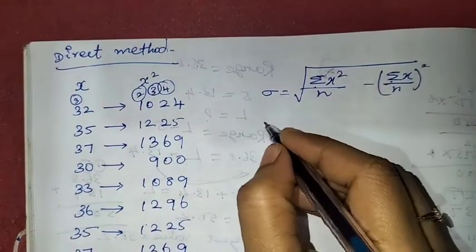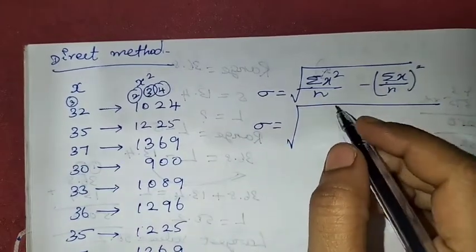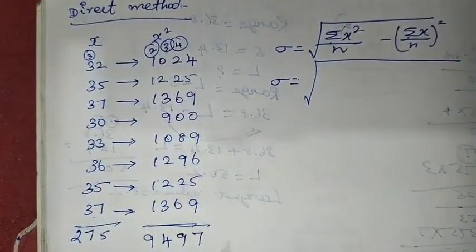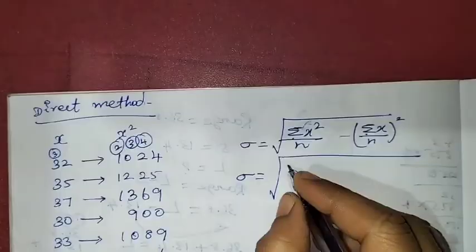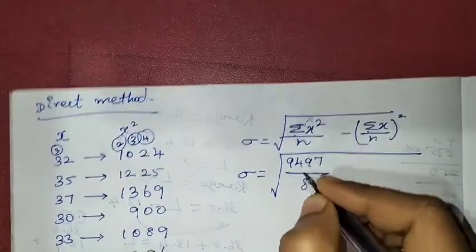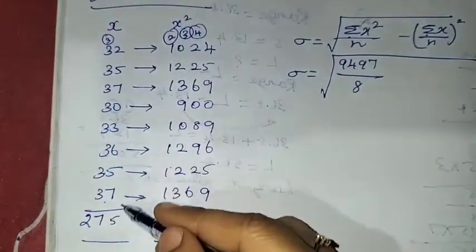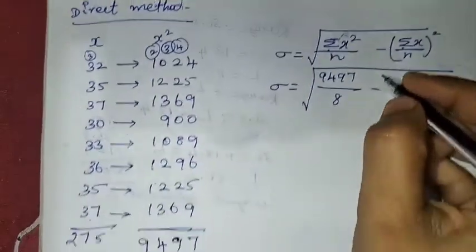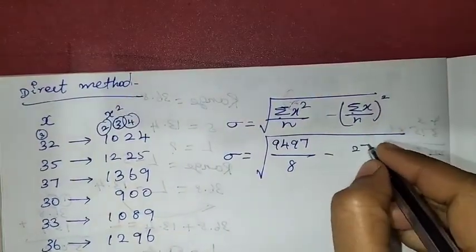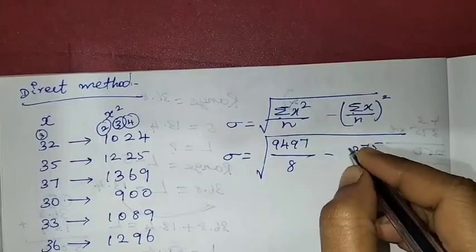Now we will substitute into the formula. Standard deviation sigma equals summation x squared, which is 9,497, divided by n. n is the number of observations, which is 8. Minus summation x, which is 275, divided by 8, the whole square.